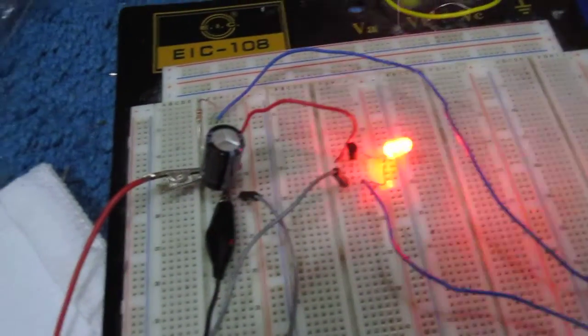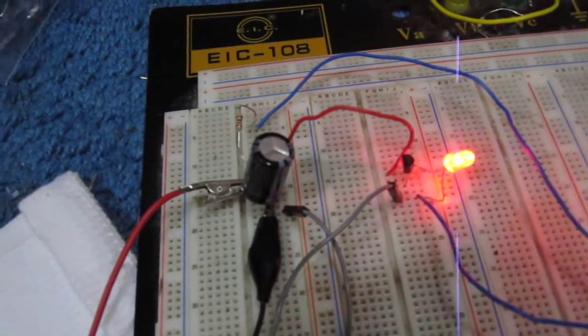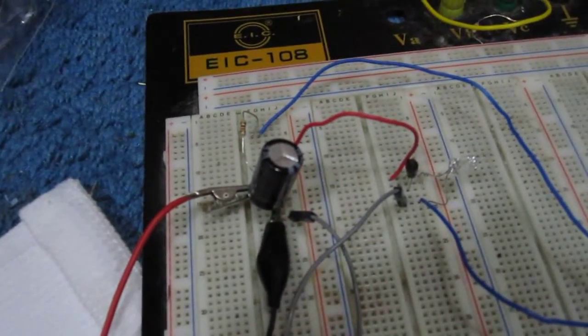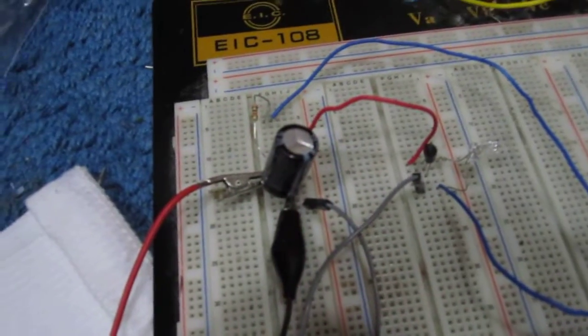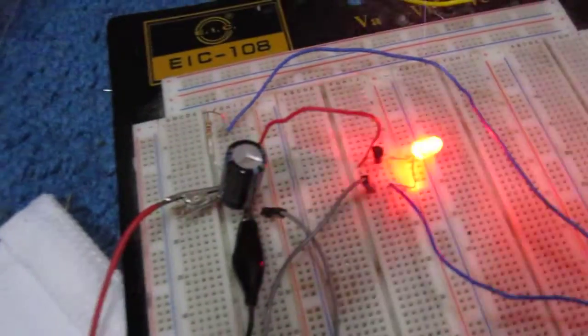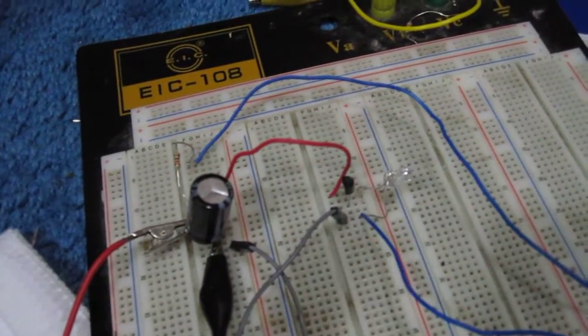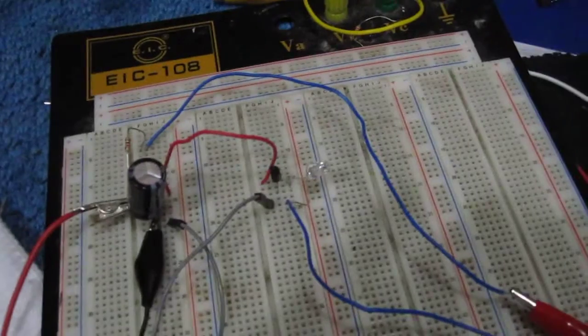Apart from this, I'm using a 3,300 microfarad electrolytic capacitor and a 1 kilohm resistor. This resistor and capacitor determine the oscillation rate or rate of flashing of the output device.